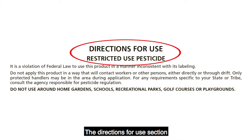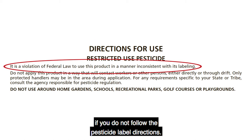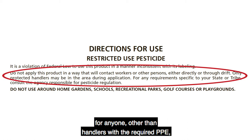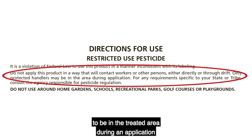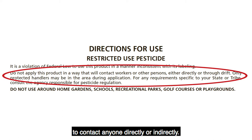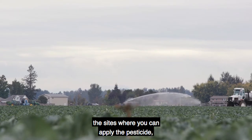The Directions for Use section has two very important statements. The first one means that it is against the law if you do not follow the pesticide label directions. The second one means that it is against the law for anyone other than handlers with the required PPE to be in the treated area during an application, and that the applicator cannot allow the pesticide to contact anyone directly or indirectly.